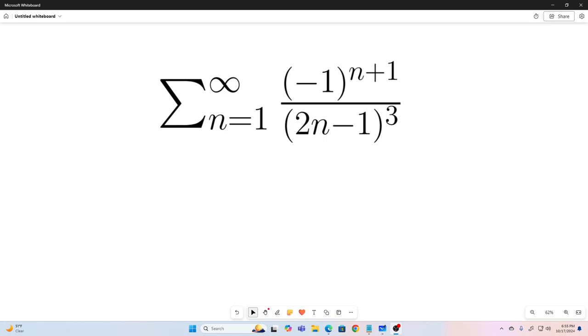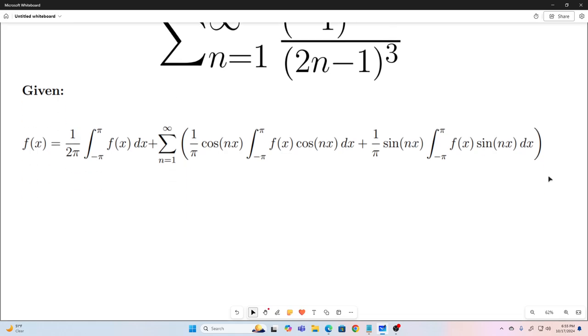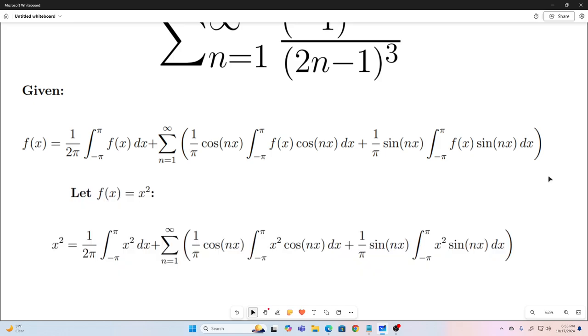the alternating sum of the reciprocals of the odd cubes. And we're going to be using this formula that I derived, I believe, two videos ago. Now, this is basically a form of the Fourier series formula. This will be good for x on the interval negative pi to pi inclusive. So, in that formula, we will let f of x equal x squared, and that's going to give us the following.